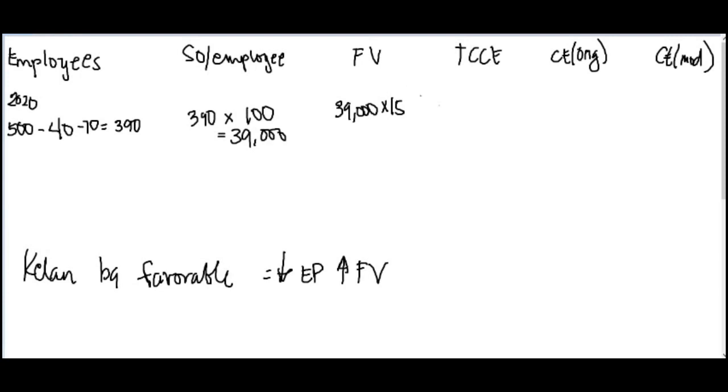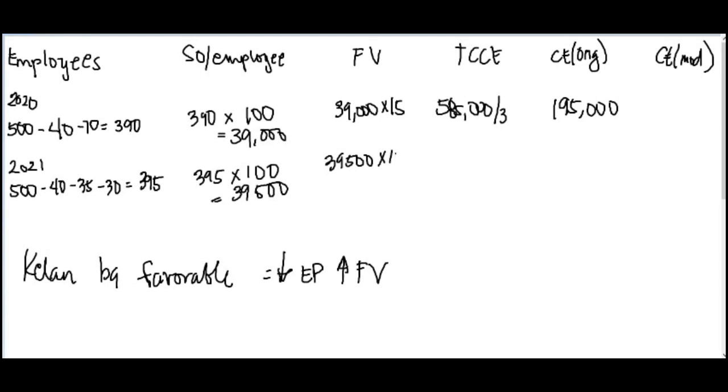390 employees, each will receive 100 shares. You have a total of 39,000. So for 39,000, multiply by the fair value per share times 15. In your book, it's 15, the fair value. So your total compensation is 585,000. What's our magic? Three years, divided by 3. So your compensation expense, original, is 195,000. You don't have modified yet because nothing has happened yet with modification.